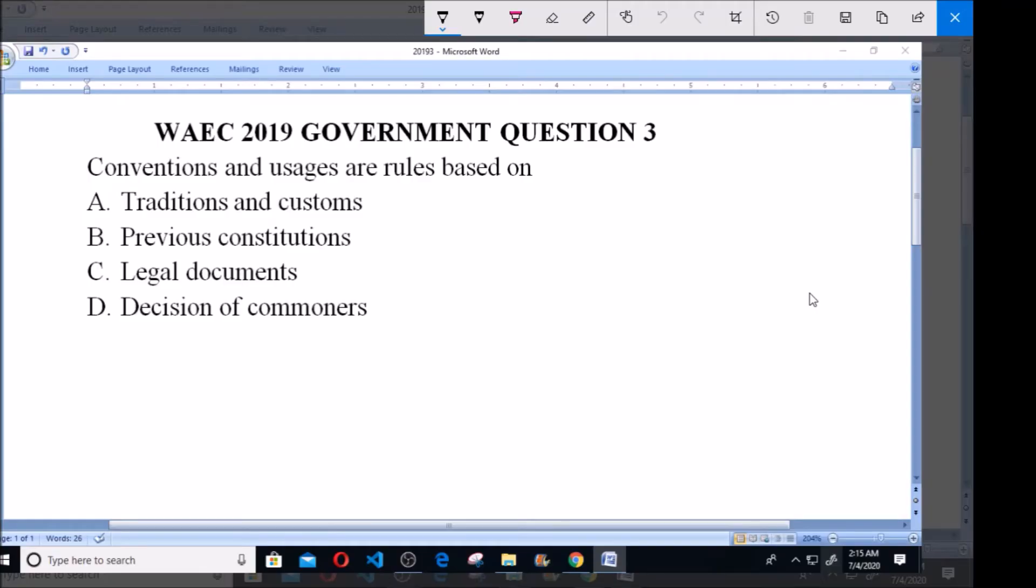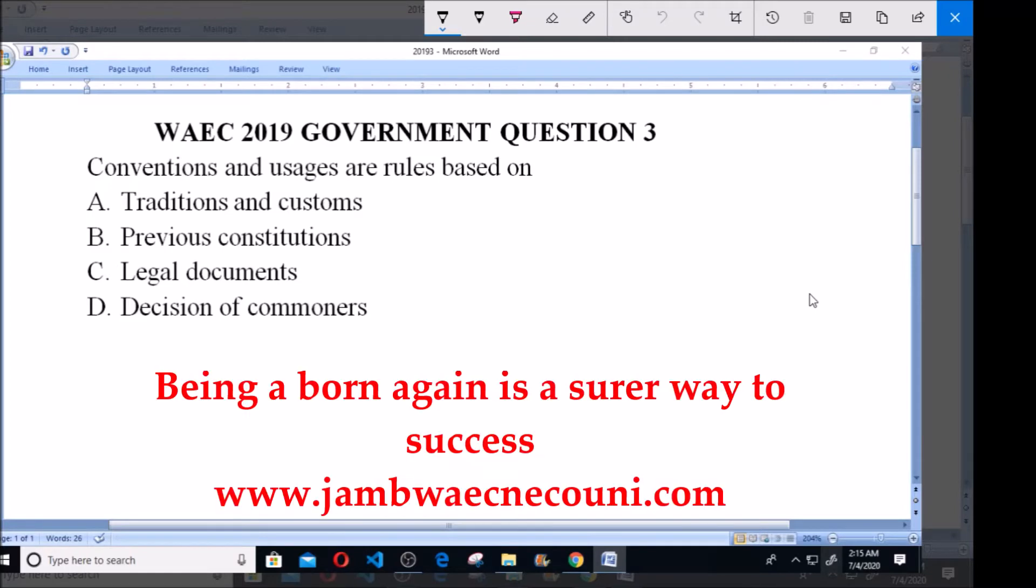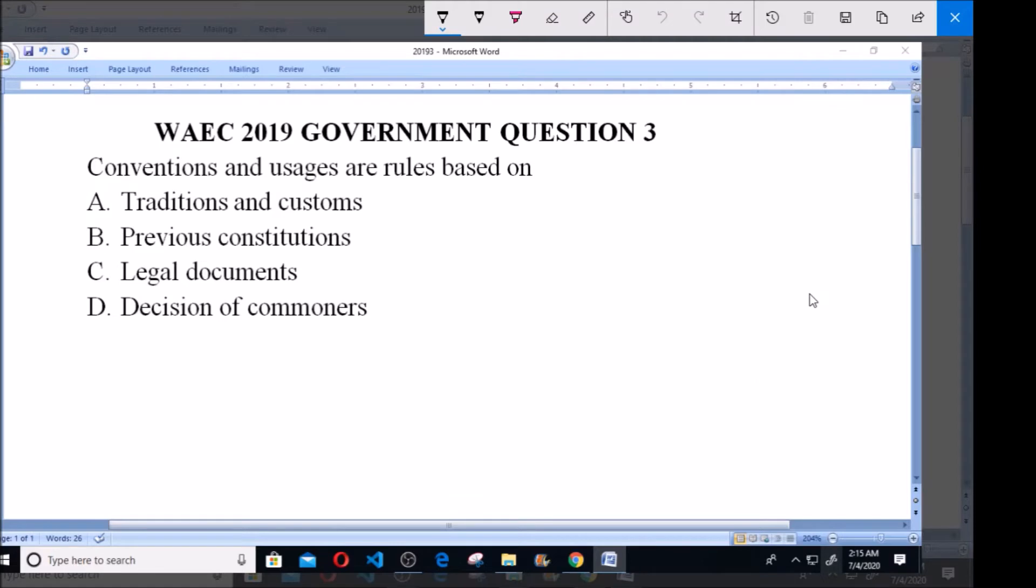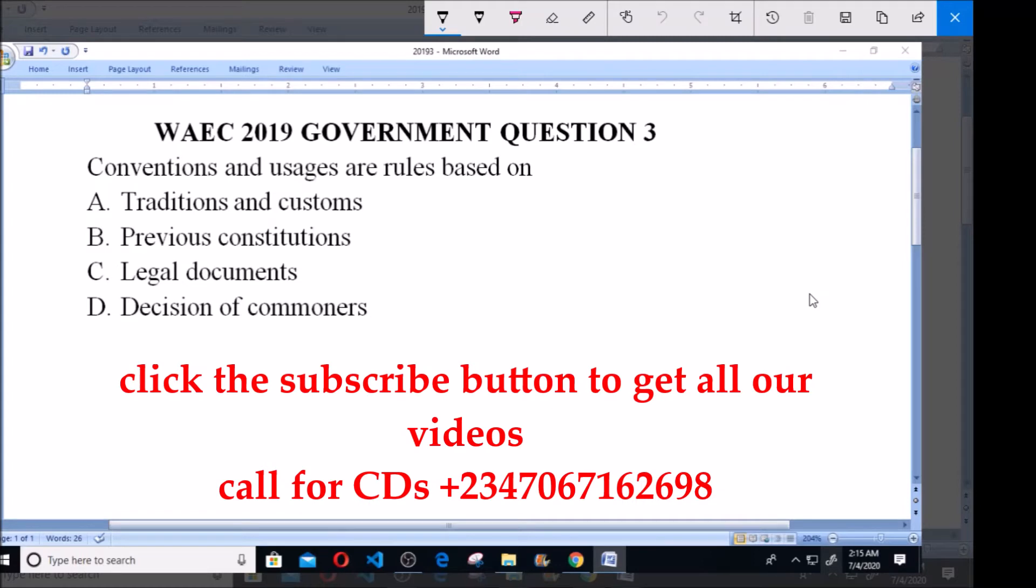Let's look at question number three for WAEC 2019 Government. Conventions and usages are rules based on: A) traditions and customs, B) previous constitutions, C) legal documents, D) decision of commoners. Now whenever you hear the word convention and usages, that is what people do in their communities, it has a lot to do with the traditions and customs.